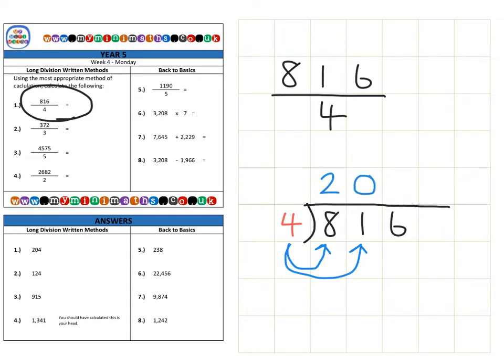So we place a zero here. And we haven't used this one at all, so we make sure we carry that over to the next value, which is 16. So how many fours fit into 16? Well we know our four times table - four fours are 16, so that's going to be four for a final answer of 204.